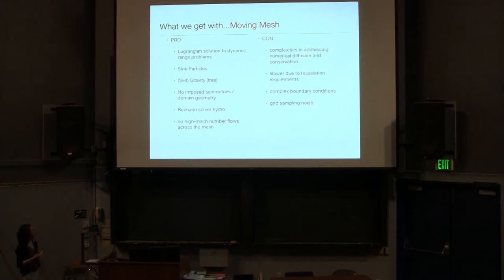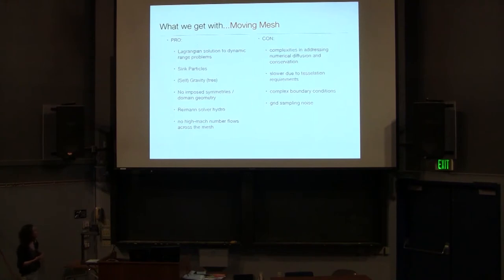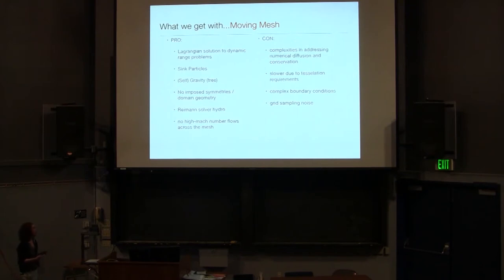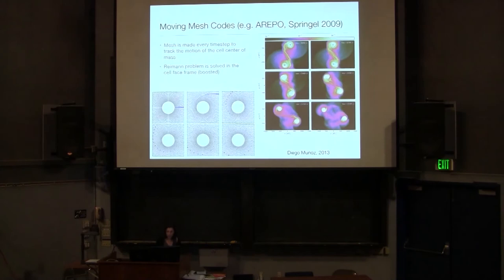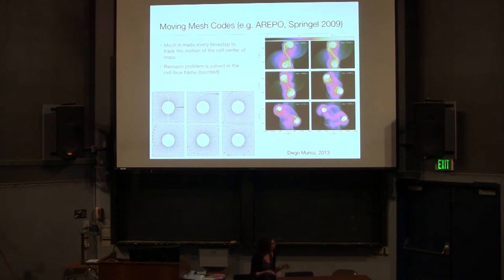Because you are recreating a mesh at basically every or frequently every time step, you actually have a huge slowdown because you don't just get to choose one grid and keep it for the entire simulation — you have to keep changing it. It can also have complex boundary conditions, and somewhat similar to SPH where you have particle sampling noise, you actually get grid sampling noise. If I have a Cartesian grid, I lay it down once — there are no errors associated with choosing that domain. If I keep laying down new grids, I build up errors due to resampling and recreating a mesh at every time step. The code I'll talk about in particular is AREPO, which is sort of the new version that Volker Springel has come up with.